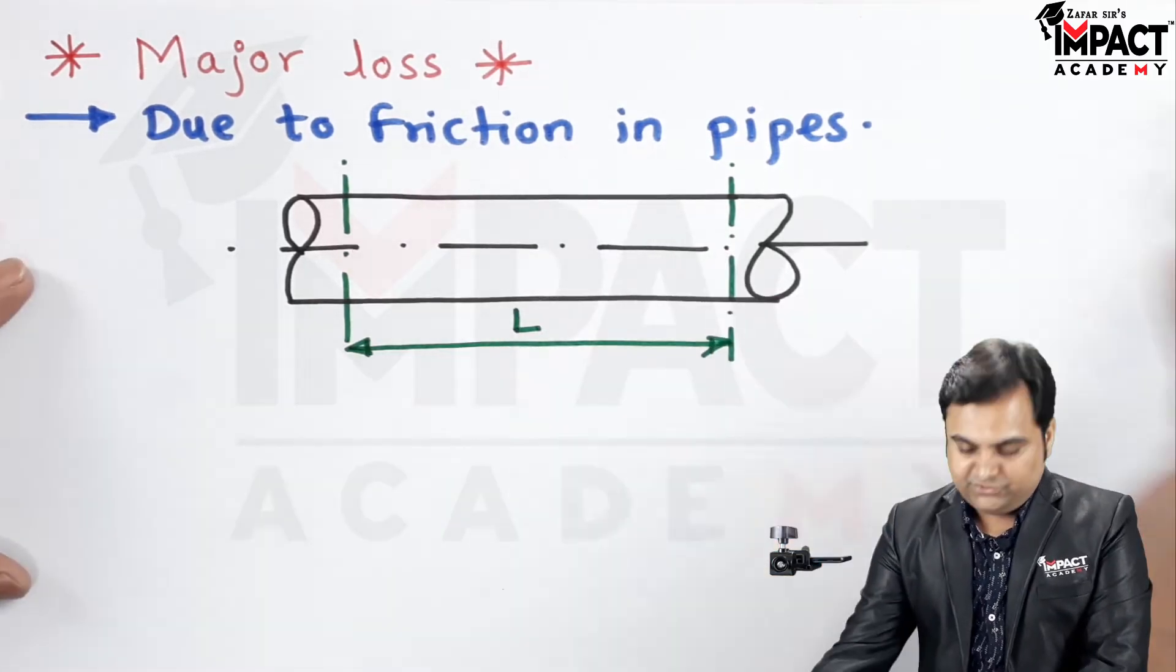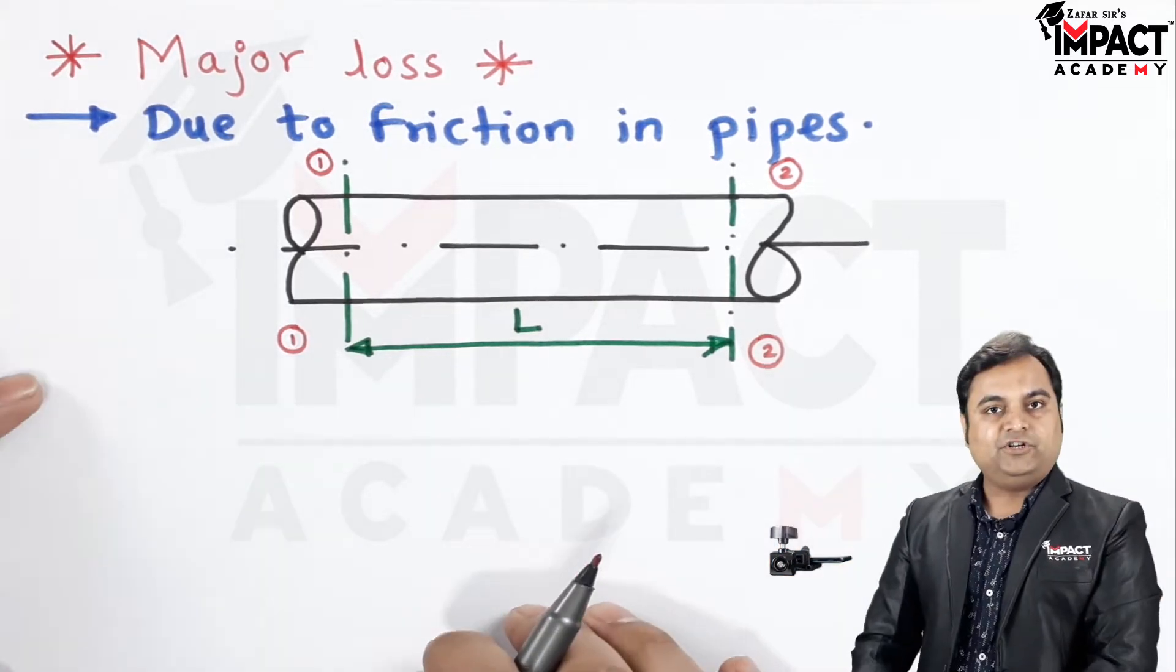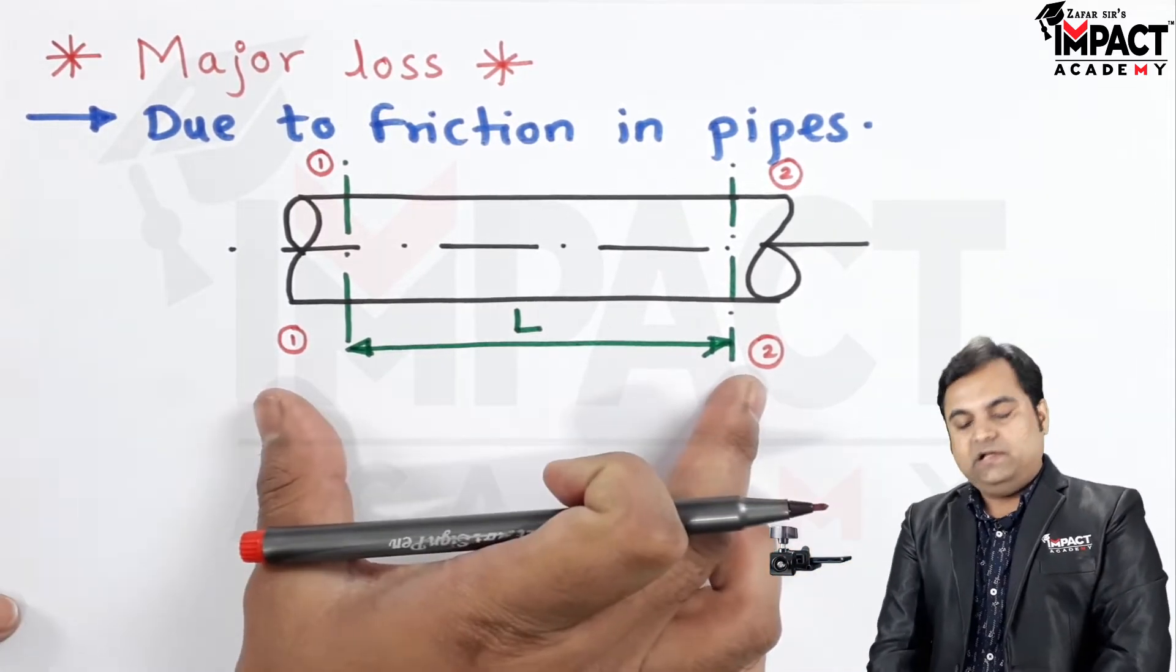Here I have considered two sections, section 1 and section 2. Between them L is the length of the pipe.